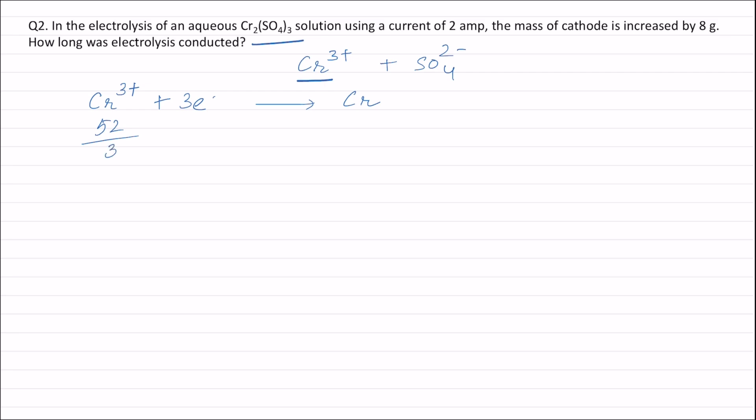Now, the increase in the weight of cathode will be equal to the weight of chromium deposited, which is equal to 8 grams.